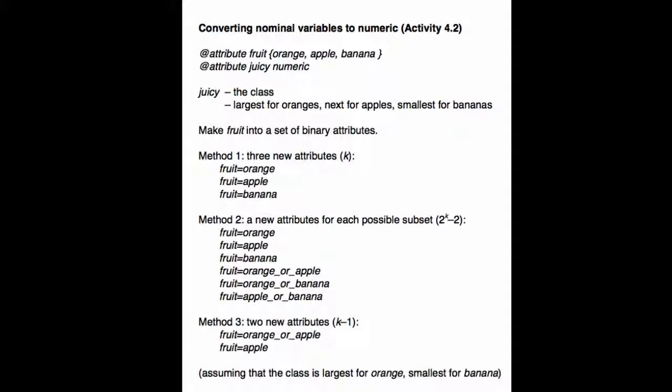Here's another way of doing it in method 2. We can take each possible subset as well as orange, apple and banana. We can have another binary variable for orange or apple. And another one for orange or banana. And another one for apple or banana. So, for example, if the value of fruit was orange, then the first attribute would be 1. That's the fruit equals orange. And the fourth attribute would be 1. And the fifth attribute would be 1. And all the others would be 0.